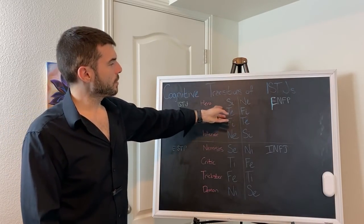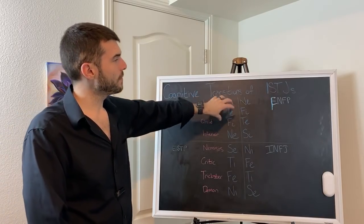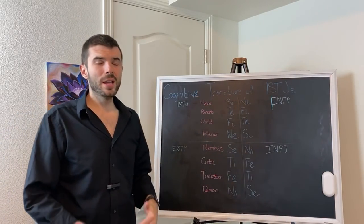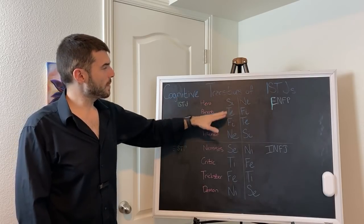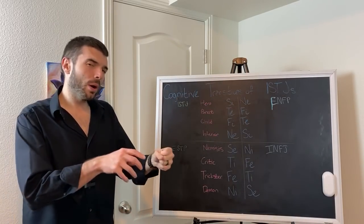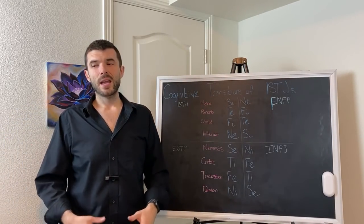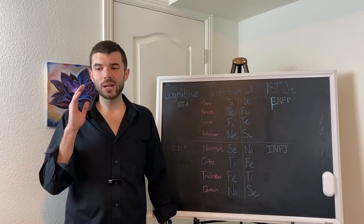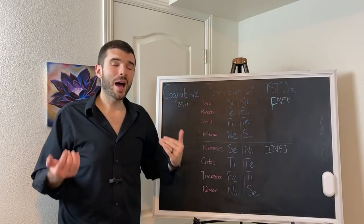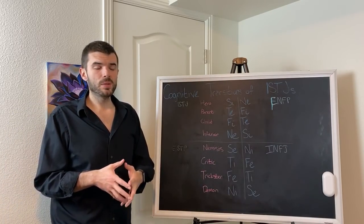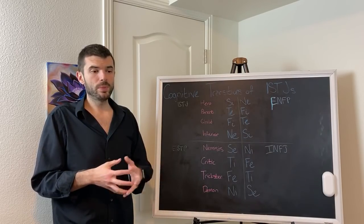When they cognitive transition to ENFP, their cognitive functions flip upside down. It's called inversing. When they inverse into their ENFP subconscious, it's the best part of them. They become very charitable when they're actually feeling wanted.